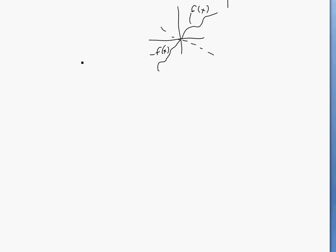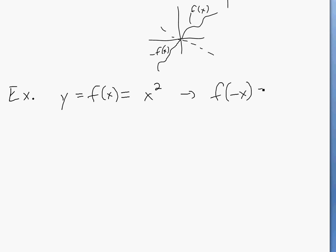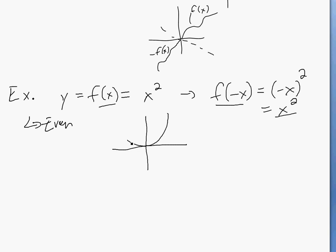Let's look at a couple of examples. An easy example: say you have y equals x squared. If you put negative x in there, f of negative x equals negative x squared, which equals x squared. So f of negative x equals f of x — this one is even. You know what this function looks like: it's just a parabola.